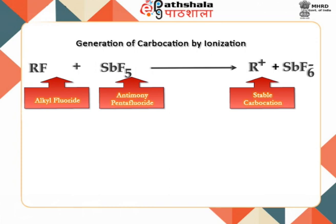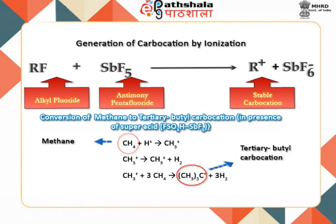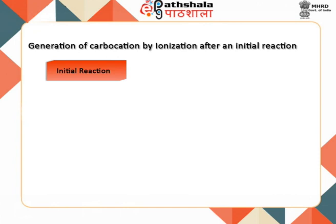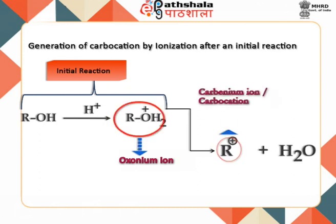Superacid reacts with alkanes as well. For example, at 140 degrees Celsius, it converts methane into tertiary butyl carbocation, a reaction that begins with the protonation of methane. Sometimes the functional groups present in an organic compound first undergo an initial reaction which converts the functional group into a good leaving group, which can then ionize into a carbocation. For example, the protonation of an alcohol gives an oxonium ion which ionizes to a carbocation with the loss of a water molecule.